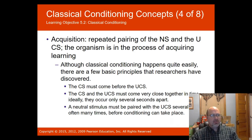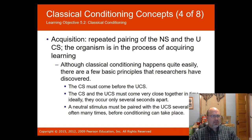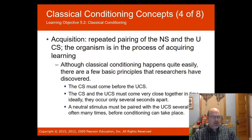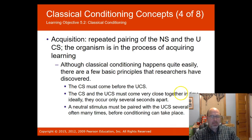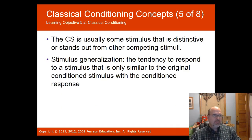Acquisition is the repeated pairing of the neutral stimulus and unconditioned stimulus — the organism is in the process of acquiring learning. For classical conditioning to work, the conditioned stimulus must come before the unconditioned stimulus, and they must occur very close together in time — ideally only a few seconds apart; more than five seconds and the experiment won't work. The conditioned stimulus must also be distinctive and stand out from other competing stimuli.